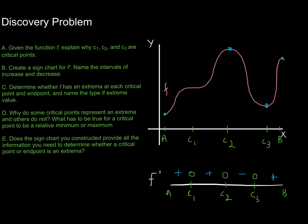At the endpoints: a and b were both relative extrema — a being a relative min and b being a relative max. A left endpoint is a minimum value if everywhere to the right the function is increasing. For a right endpoint, the function is a maximum if everywhere to the left it's increasing. Conversely, a left endpoint is a maximum if everywhere to the right the function is decreasing, and a right endpoint is a minimum if everywhere to the left the function is decreasing.